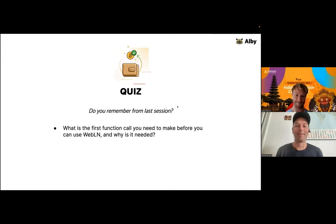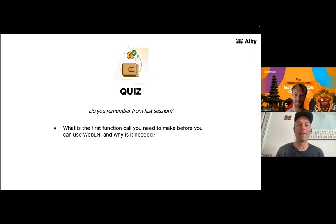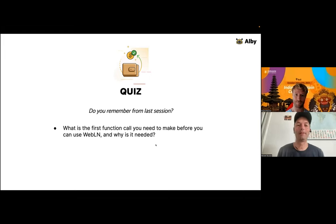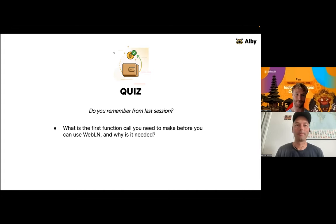Yesterday we looked at WebLN. The first recap question: what is the first function call that you need to make before you can use WebLN? When you have a web application and WebLN is injected as a JavaScript object, one first function call has to be made to be able to use it. Before you want to create an invoice, you might need to ask the user for permission — what is the function call to do that?